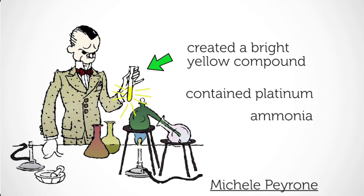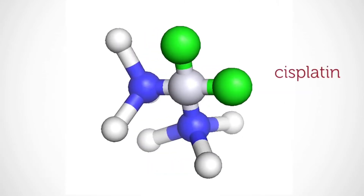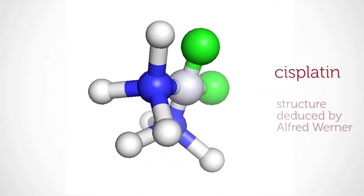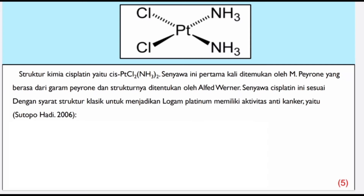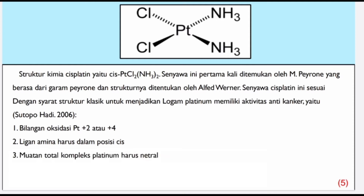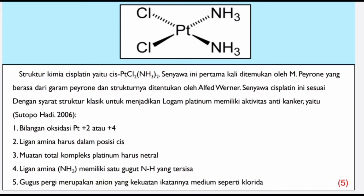Senyawa Cisplatin sesuai dengan syarat struktur klasik untuk menjadikan logam platinum memiliki aktivitas anti-kanker. Yaitu: pertama, bilangan oksidasi platinanya +2 atau +4; kedua, ligan amina harus dalam posisi cis; ketiga, muatan total kompleks platinum harus netral; keempat, ligan amina memiliki satu gugus NH yang tersisa; kelima, gugus pergi merupakan anion yang kekuatannya medium seperti klorida.